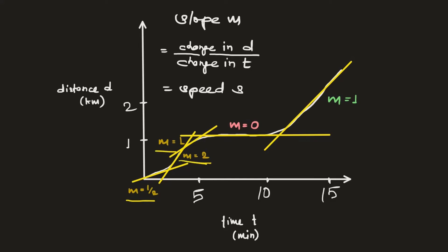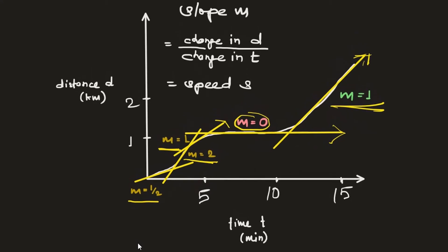On the third slope when you started slowing down, your speed was recorded as 1 km/min. For the flat slope the value of m is zero. Then on the final slope you walked with a constant speed of m = 1. So after analyzing the graph, our speed was changing at each interval: 0.5, then 2, then 1 km/min.